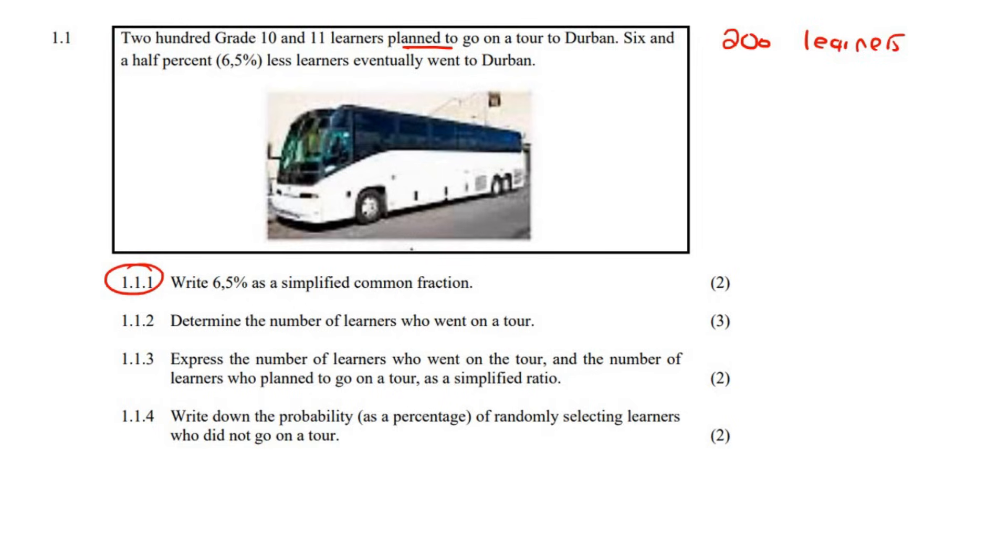So the first question, write 6.5 percent as a simplified common fraction. Okay, so the first thing we're going to do is we need to know that 6.5 percent is the same as 6.5 out of 100. Now, because it's only two marks, you could literally go and type this on your calculator now, and it will simplify it for you. If you had to do that, you would end up with 13 over 200. So there is your answer, 13 over 200.